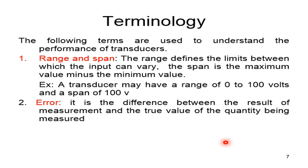For example, suppose the true temperature is 20 degrees Celsius and a thermocouple is used to measure it. If it reads exactly 20 degrees, there is no error. If it reads 21 degrees — one degree more than the true value — there is a positive error of 1 degree. If it reads 19 degrees — one degree less — that is a negative error. Here in the notes, 50 degrees is used as the example value.